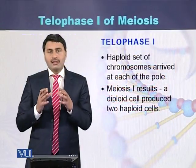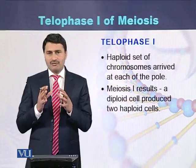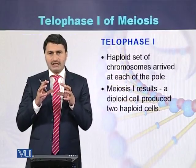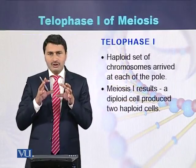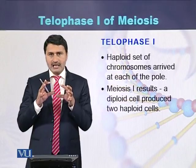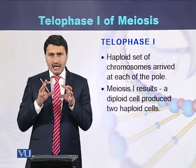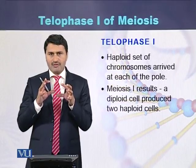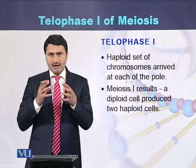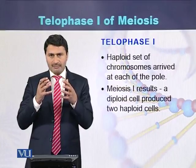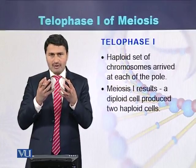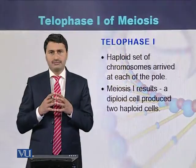To summarize telophase: at the end of telophase, 2 cells are produced. Each cell contains half the number of chromosomes compared to the mother cell, which contained a diploid number of chromosomes.